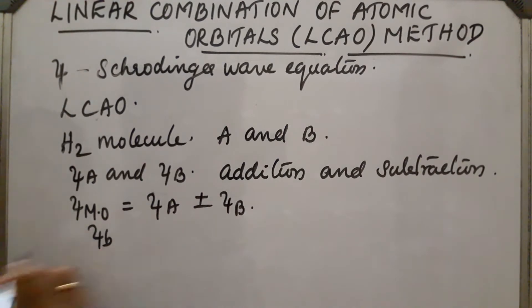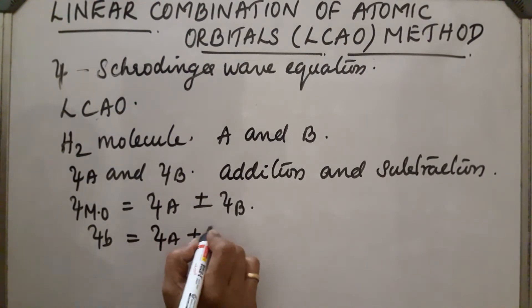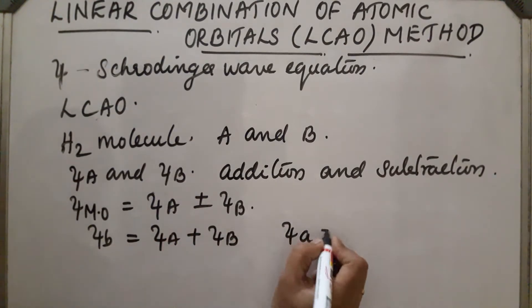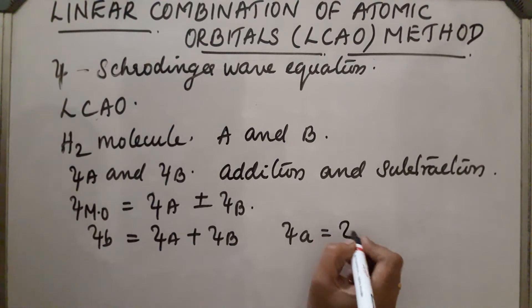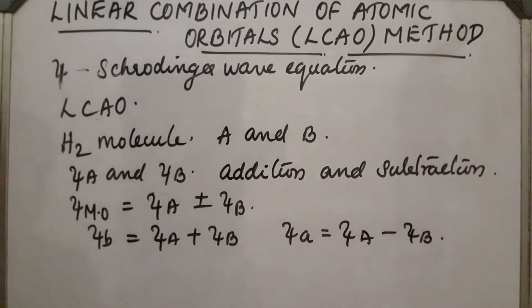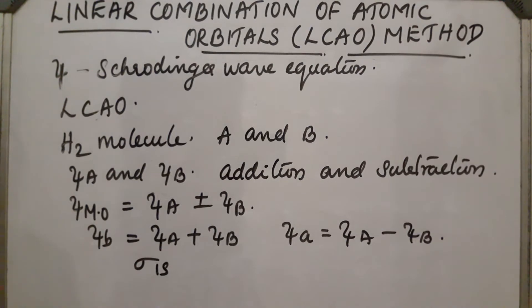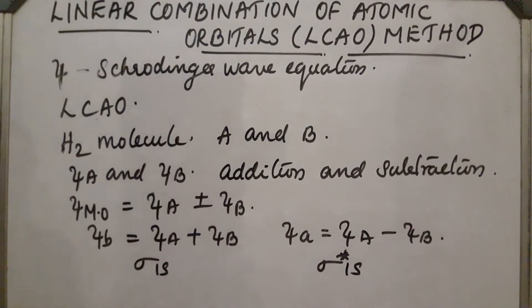The bonding molecular orbital ψB can be represented as sigma of the 1s orbital, and the antibonding molecular orbital ψA can be represented as sigma star. So for the 1s orbital, we represent the bonding MO as sigma 1s and the antibonding MO as sigma star 1s.